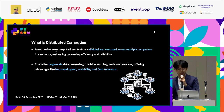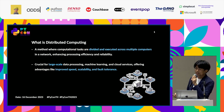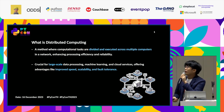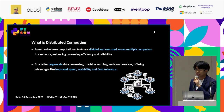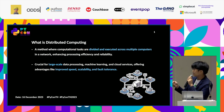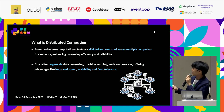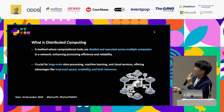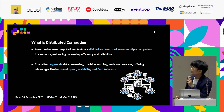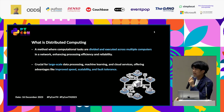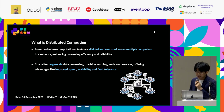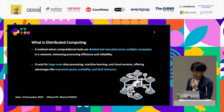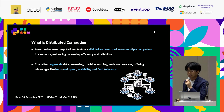First, let me explain what Distributed Computing is. Distributed Computing is a method where computational tasks are divided and executed across multiple computers. You can see from this structure that one computer can divide and execute tasks across multiple computers in your network. It can enhance processing efficiency and reliability.